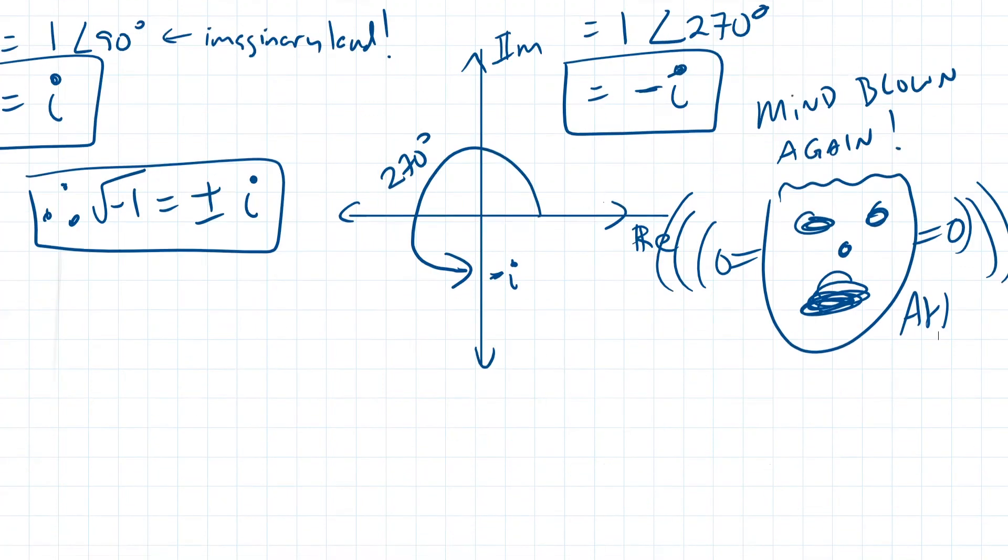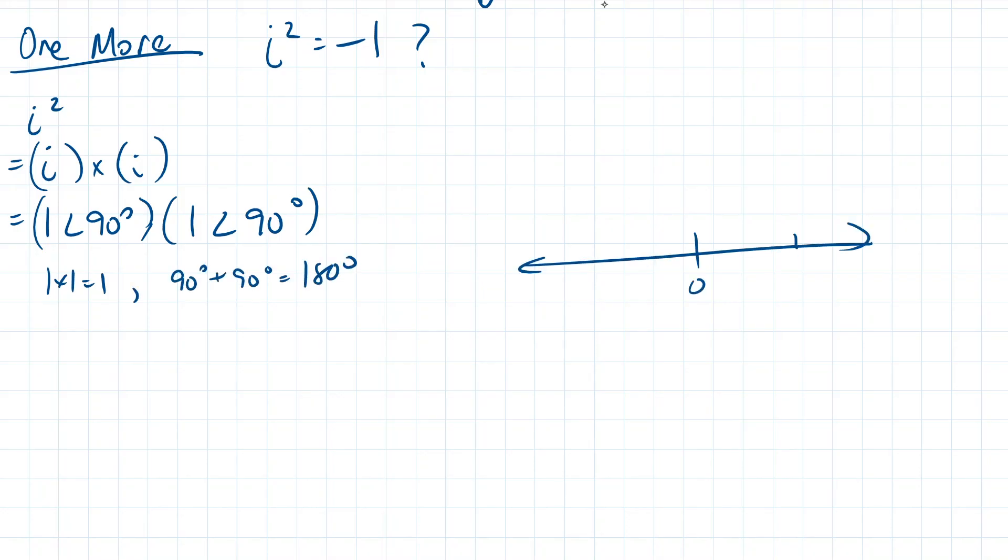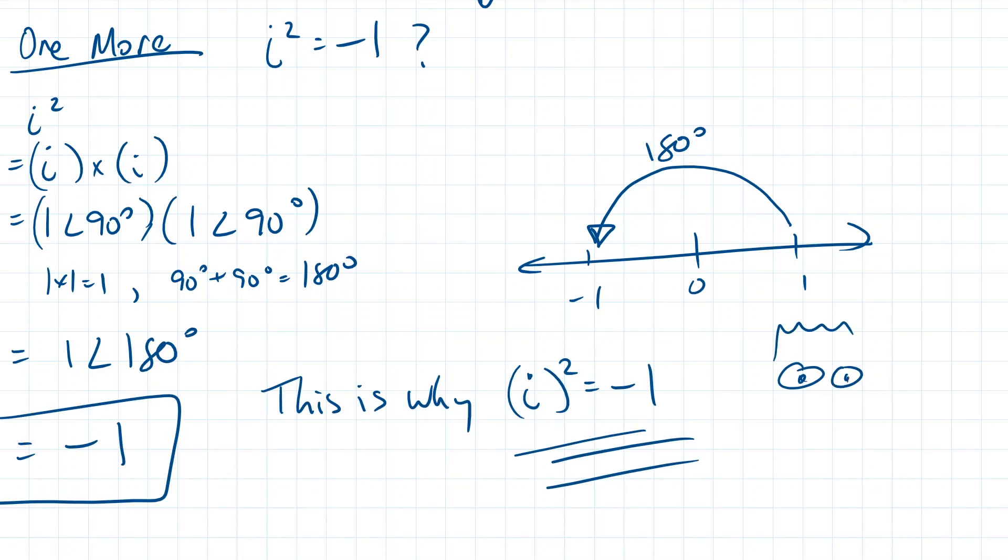Alright, alright, one more crazy thing to think about. Why is i squared equal to negative 1? We know that i is equal to 1 with a phase shift of 90 degrees, so i squared is equal to 1 with a phase shift of 90 degrees times 1 with a phase shift of 90 degrees. As we know, 1 times 1 is still 1, and 90 degrees plus 90 degrees is equal to 180 degrees. So i squared is equal to 1 with a phase shift of 180 degrees, or out of pure simplicity, negative 1. I hope that you now have the real understanding of why i squared is equal to negative 1.